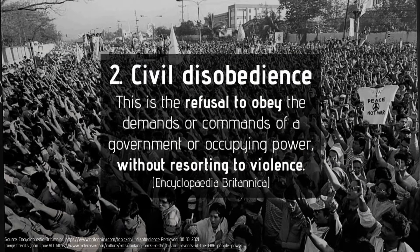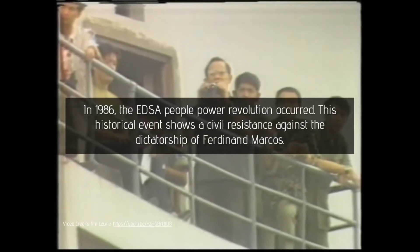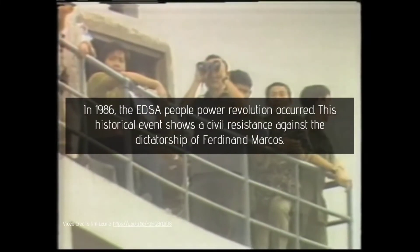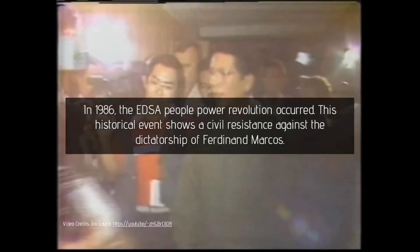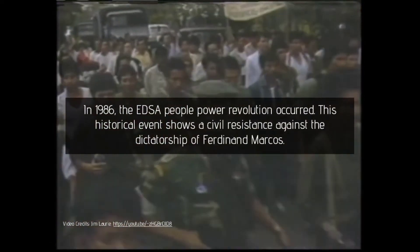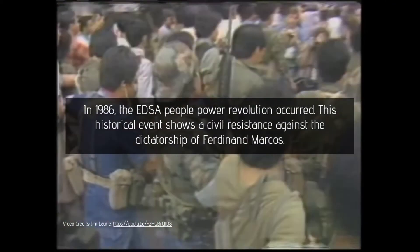Second on our list is civil disobedience. This occurs when people refuse to obey the demands and commands of the government or occupying power. But unlike hostilities, civil disobedience happens without resorting to violence. I'm sure there's one familiar event that comes into your mind, so let's take a look at it. I'm talking about the EDSA People Power Revolution, which occurred in 1986. This event highlighted the refusal of the people to recognize the dictatorship of Ferdinand Marcos. This may seem like a justifiable event, unlike the Battle of Marawi, but the revolution still disrupted the peace and order.